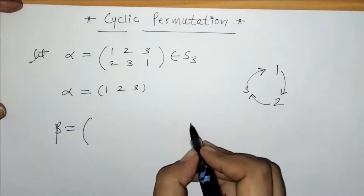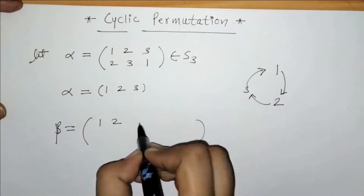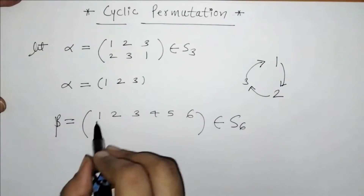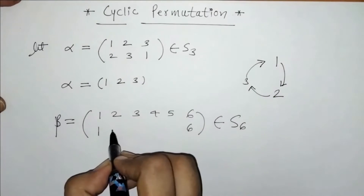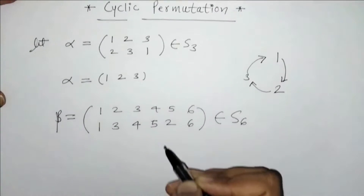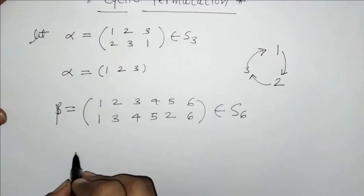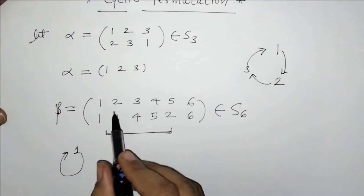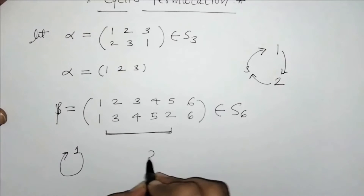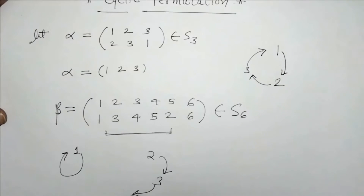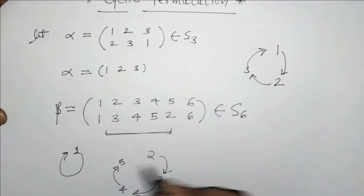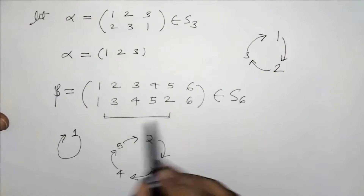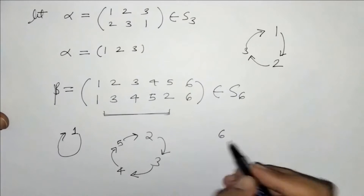Next, consider we have a permutation of the set S6. Here 1 maps to 1 and 6 maps to 6. We have 1 maps to 1, and for another element, 2 maps to 3, 3 maps to 4, and 5 maps to 2. So we get one cycle of 4 elements, and 6 maps to 6.